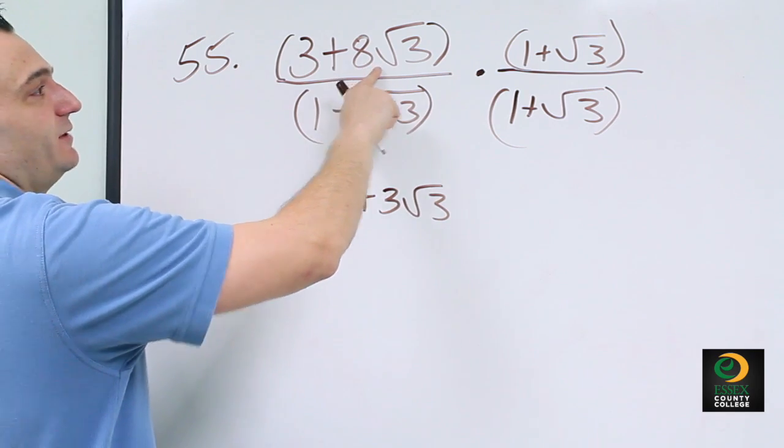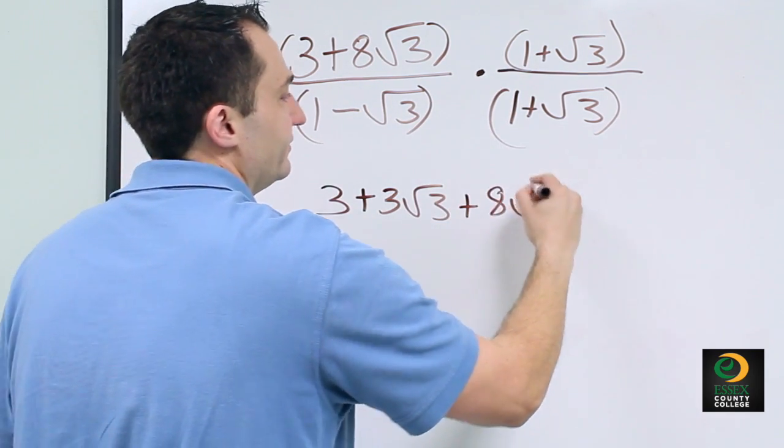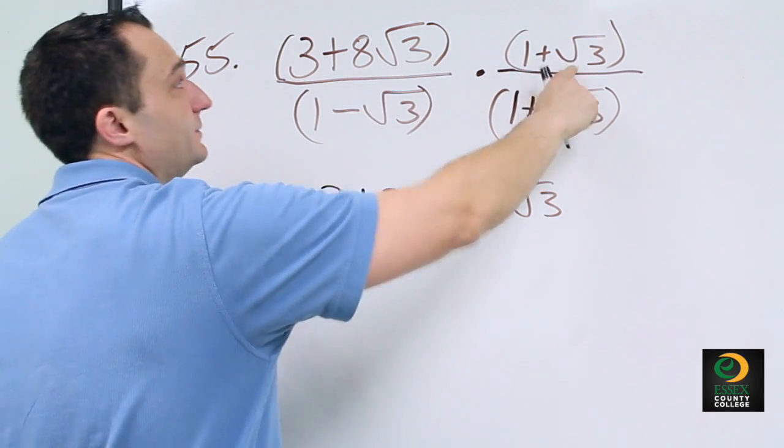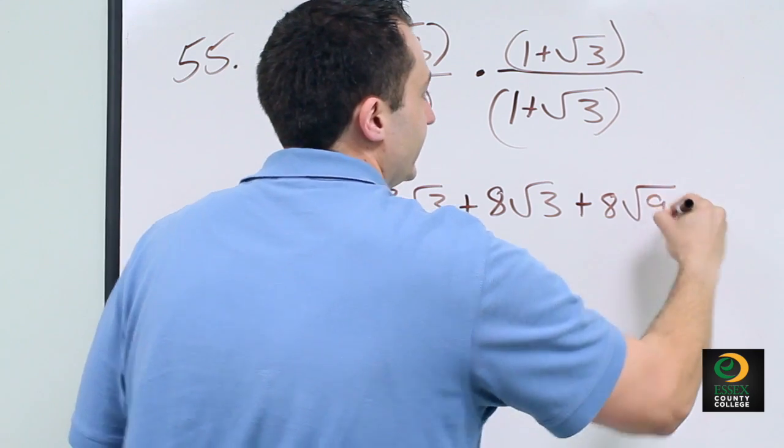Our inner is 8 radical 3 times 1, which becomes plus 8 radical 3. And then our last is 8 radical 3 times radical 3, which becomes 8 radical 9.